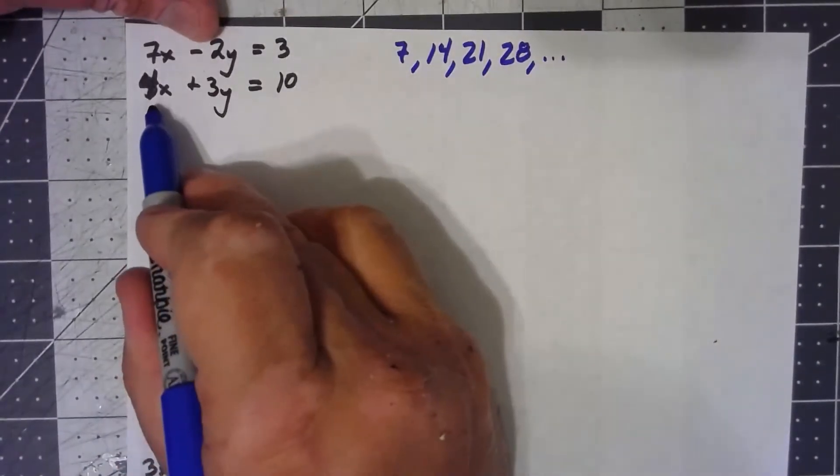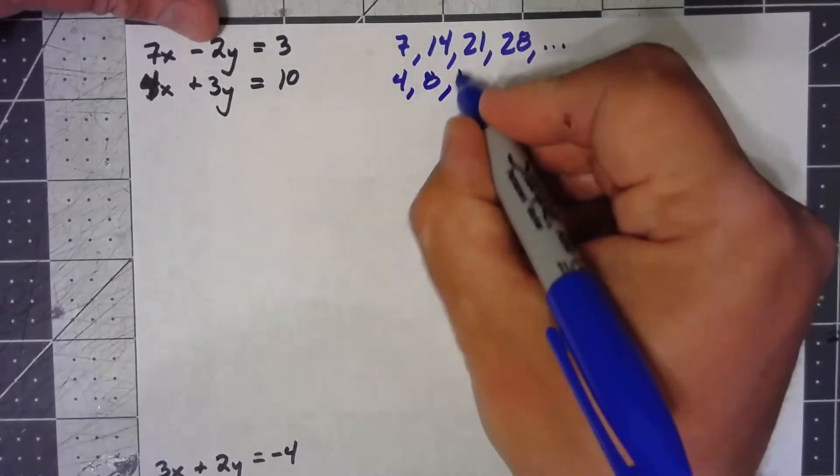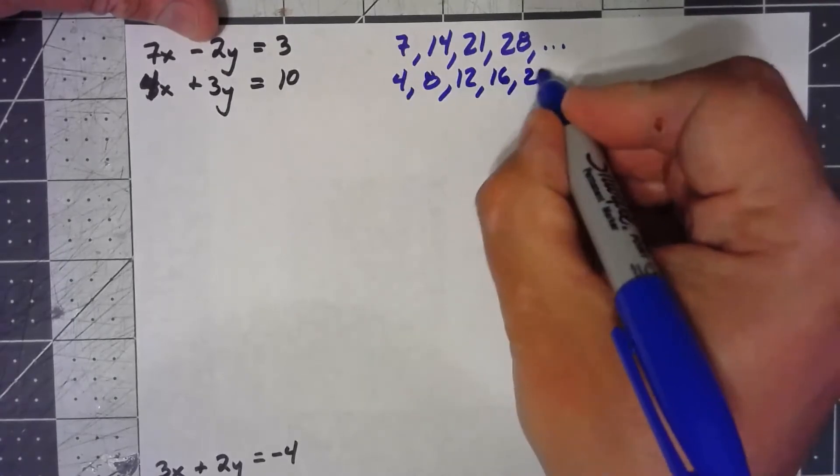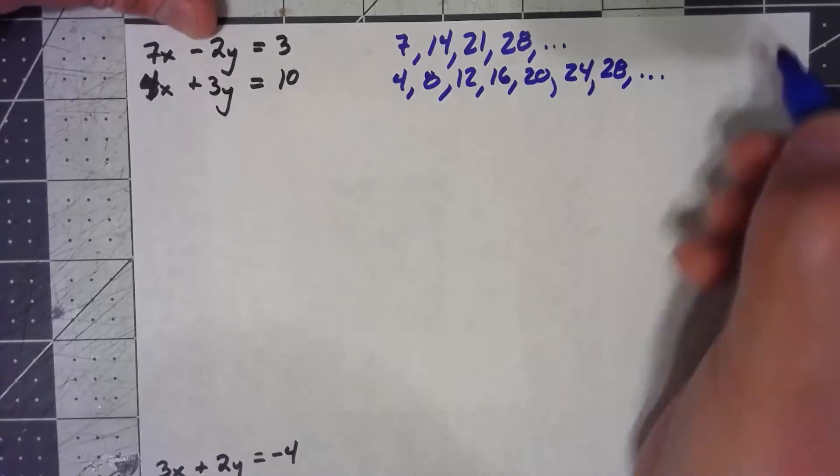And if I start writing multiples of 4, I've got 4, 8, 12, 16, 20, 24, 28, and so on.